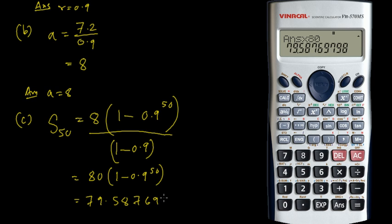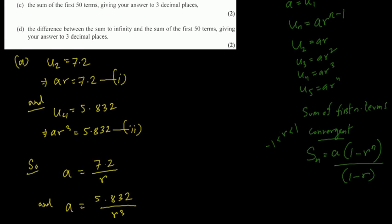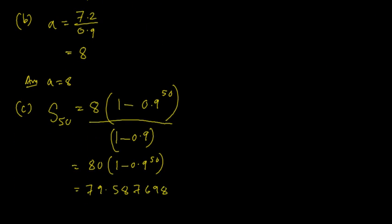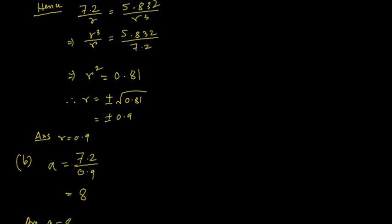Rounding to three decimal places: the digit after the third decimal is 7, so we round up. The answer is S50 = 79.588.